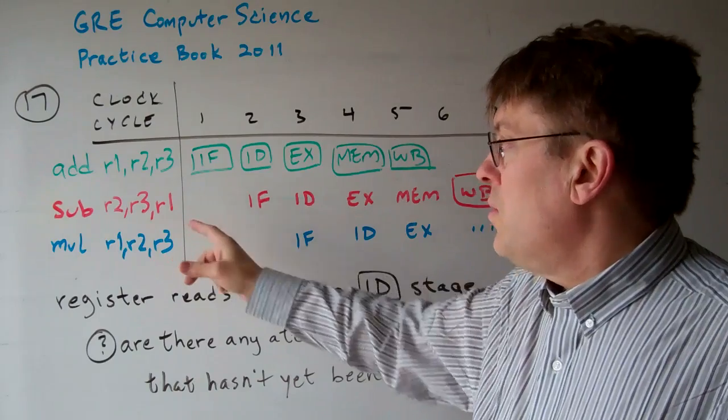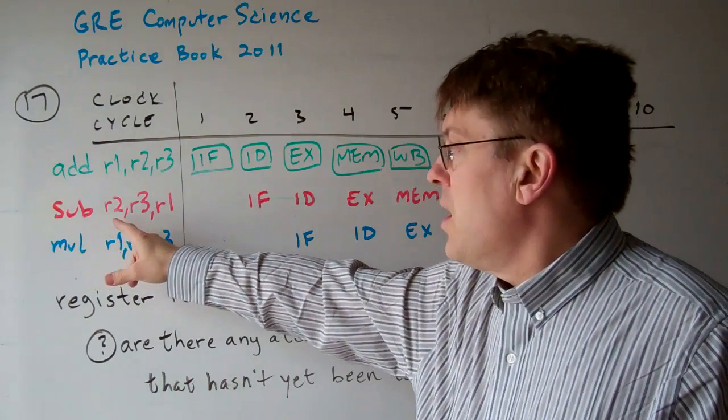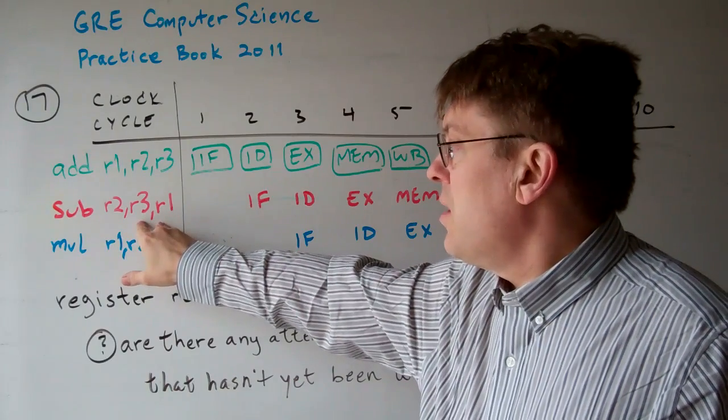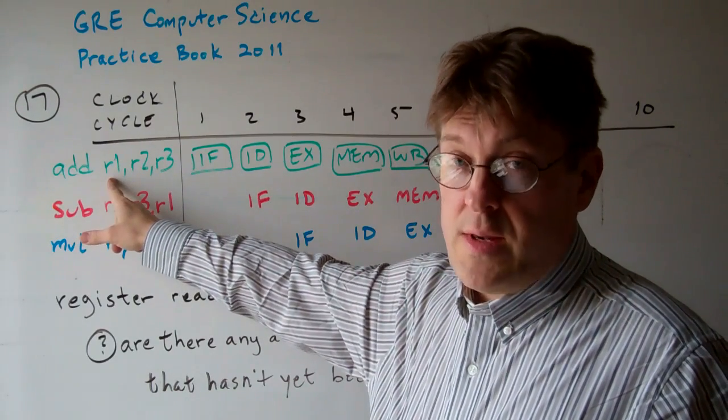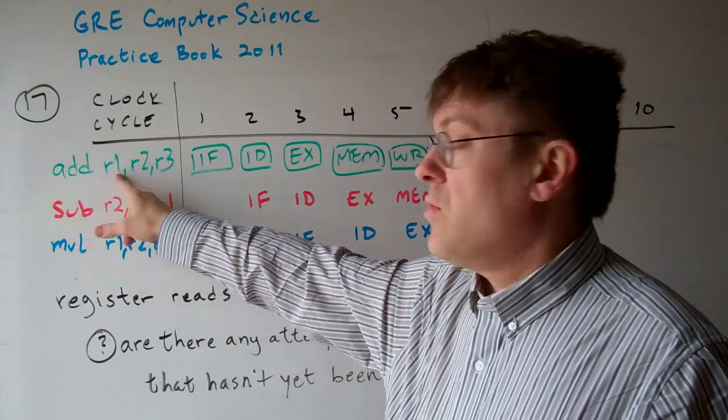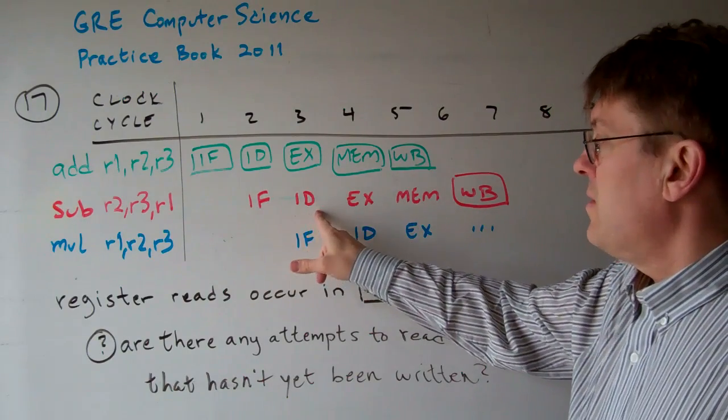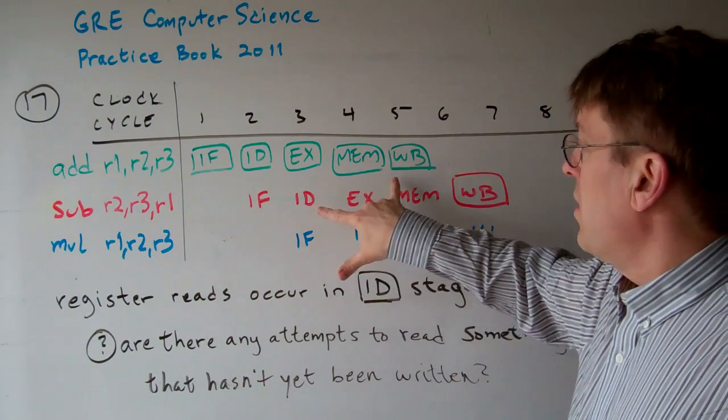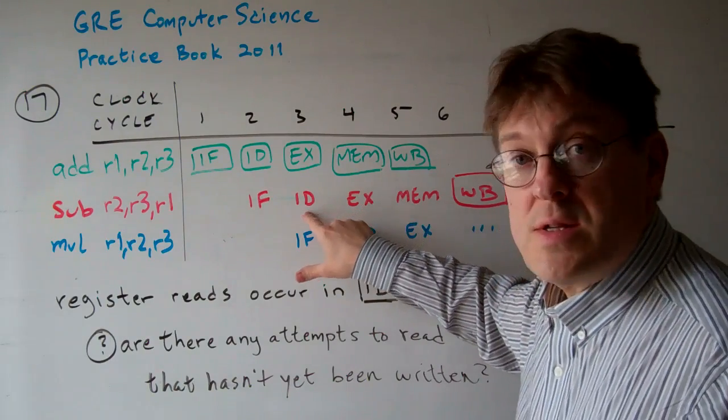On line two, the subtract operation is going to output something to R2 using R3 and R1. The problem is R1 might not have been written yet, so it might be reading before this writing has happened. For example, if the ID stage is here, the write back has not been completed when the ID reads that register.